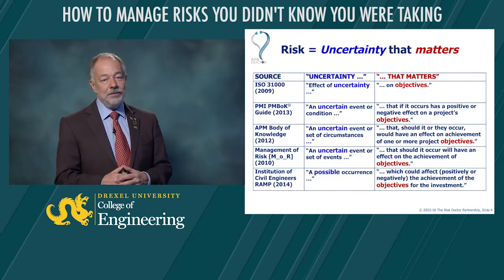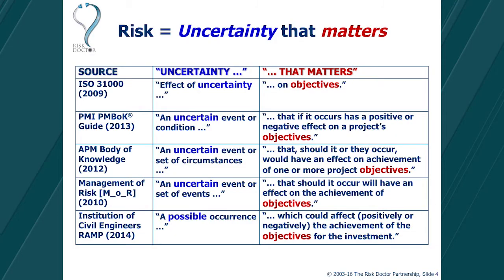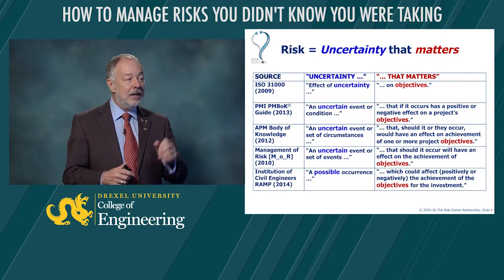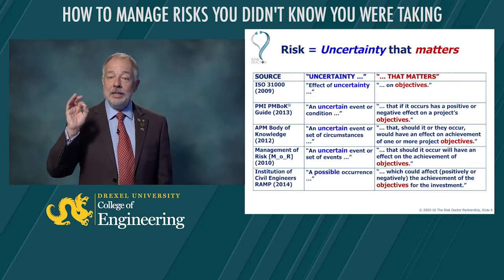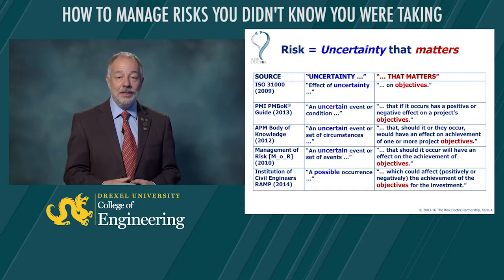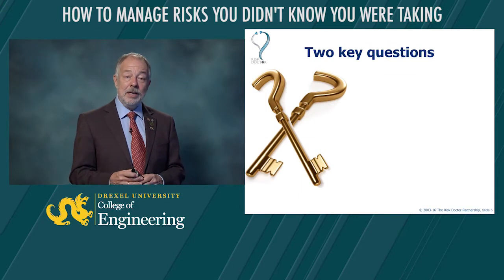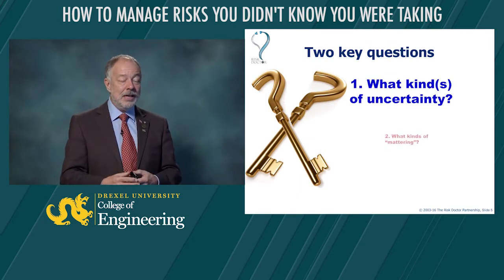We find this in a number of formal definitions of risk. Here are examples from five global project management standards where the definition of risk includes two halves: something to do with uncertainty, and something to do with what matters as defined by our objectives. The ISO 31000 standard says that risk is the effect of uncertainty on objectives. The PMBOK guide from PMI says risk is an uncertain event or condition that, if it occurs, affects objectives. You'll find these same ideas in all of these different international standards: risk is uncertainty that matters.